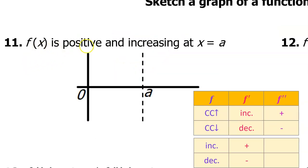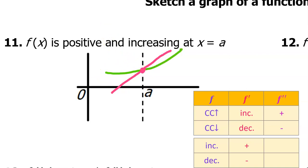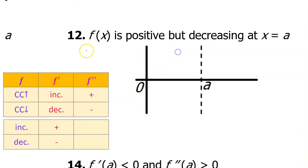Number eleven is pretty straightforward. f of x is positive and increasing at x equals a. If f of x is positive, it'll be above the axis at x equals a. It must be increasing, which means it should be rising from left to right. I've drawn it as a straight line because we don't know anything about the concavity, but I could have drawn it concave up or concave down. Number twelve says f of x is positive but decreasing at x equals a. Because it is decreasing, I'm going to make sure it is going downhill from left to right as we pass through a. Again, I drew it as a straight line, but you could have drawn it as concave up or concave down.